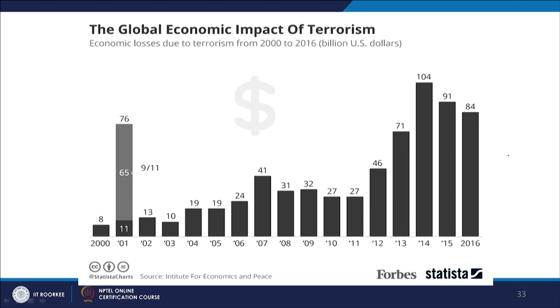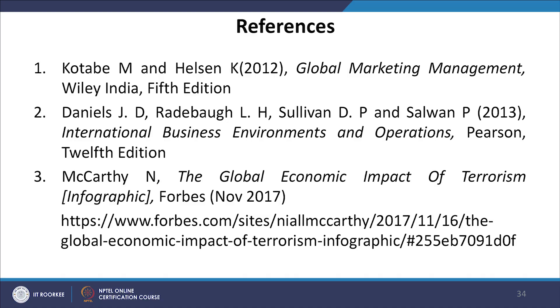This shows the economic impact of terrorism. These bar charts from Forbes show the years on one axis and the losses incurred. With this, we end this module. In this module, we have talked about how to analyze the political environment of a country. To further understand the political environment of a country, these can be the sources from where you can understand these things further.